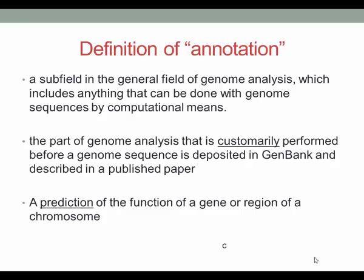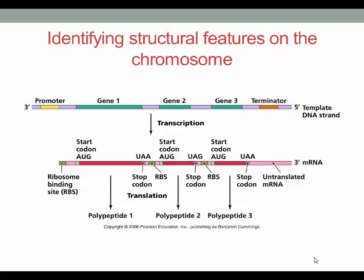Gene annotation uses bioinformatics tools to analyze sequence information and make predictions about structural elements and the function of DNA regions based on similarities to known sequences. A genome annotation can be used to predict the function of an open reading frame, where a gene starts and ends, regulatory elements controlling gene expression, and the cellular location of the translated protein, including whether a protein is modified post-translationally.